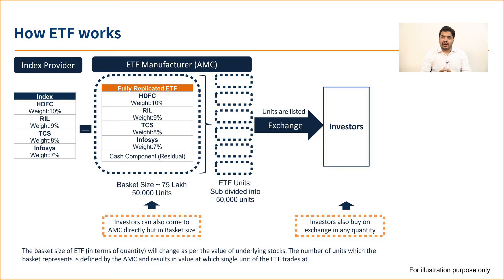You can go to your broker account, search the scheme name, select whatever quantum you want to buy, place the order, and get the ETF units in your DMAT account. This works for both buying and selling. There are more nuances and important factors to note when doing these transactions on the exchange, which I'll cover in more detail in the next episode.